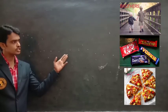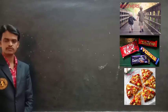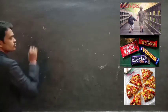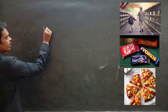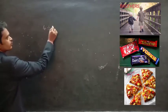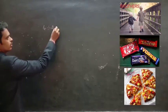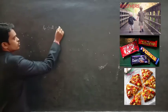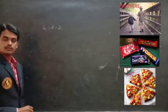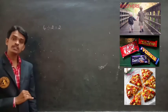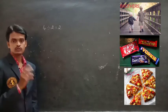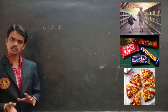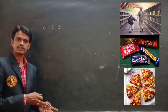We want to distribute these 4 chocolates between 2 brothers. Here we have 4 chocolates. We are dividing these 4 chocolates by 2 brothers. Then 4 is divisible by 2 — 2 times. So each brother will get 2 chocolates. The elder brother will get 2 chocolates and the younger brother will get 2 chocolates.